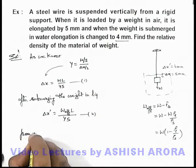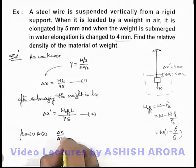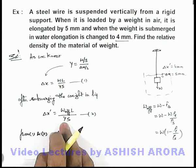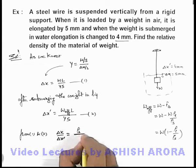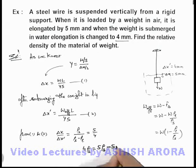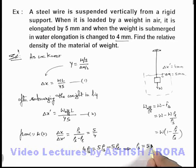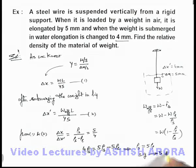Dividing the two equations, delta x divided by delta x dash equals rho_solid divided by (rho_solid minus rho_liquid), since all other parameters cancel out. Substituting values, this equals 5 divided by 4. Simplifying: 4 times rho_solid equals 5 times rho_solid minus 5 times rho_liquid, which gives rho_solid equals 5 times rho_liquid. Therefore, the specific gravity or relative density equals 5, which is the answer to our problem.